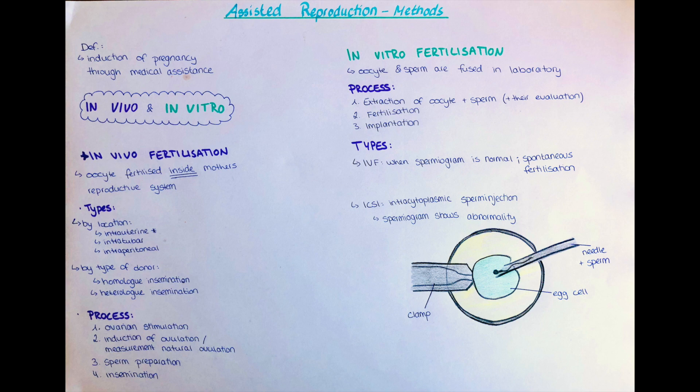We divide assisted reproduction into two major groups: in vivo fertilization and in vitro fertilization. In vivo means 'in the living,' so the oocyte will be fertilized inside the mother's reproductive system. In vitro means literally 'in the glass,' and here the fertilization occurs in the laboratory, and the fused oocyte and sperm will be transferred into the mother's uterus later on.